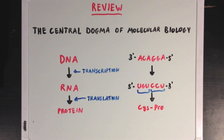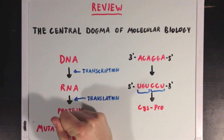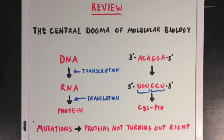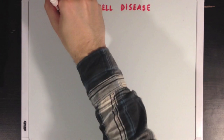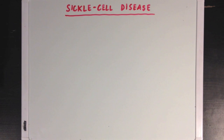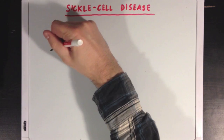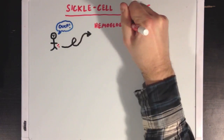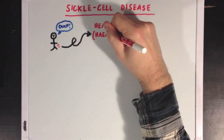Now, just very generally, we say that mutations have the effect of making this synthesized protein not turn out quite right. So I'm going to give a quick shout out to sickle cell disease, which is an example of a disease that's caused by a genetic mutation.